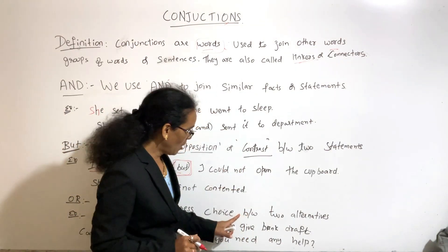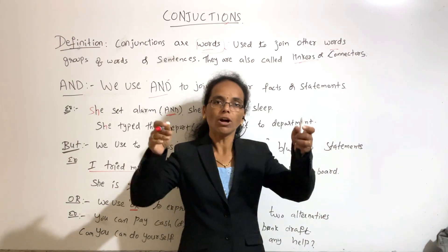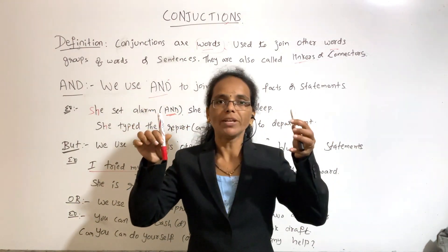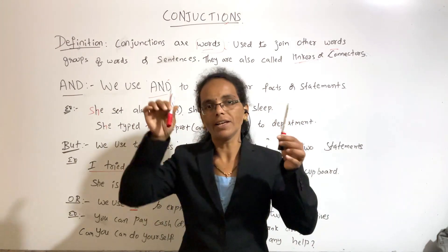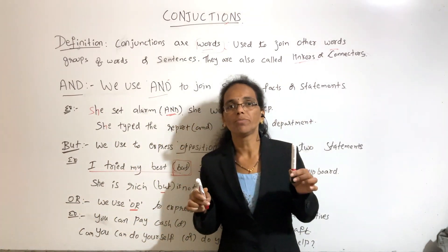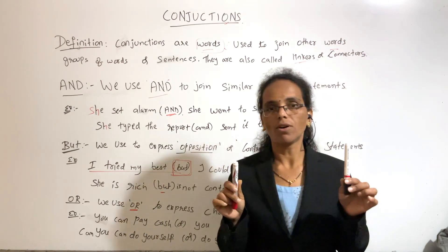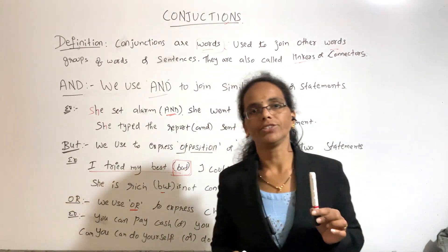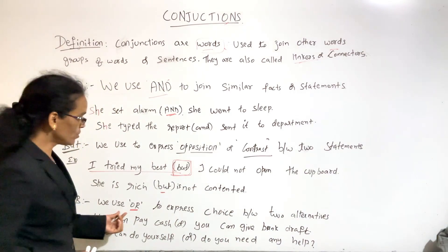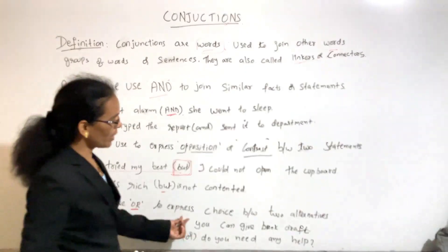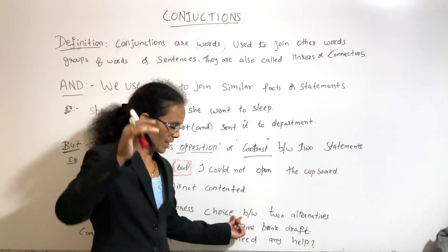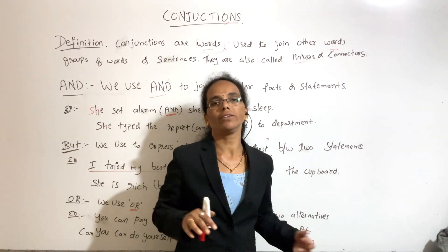Now, OR. We use OR between two alternatives. For example: red pen or black pen — either red or black. We use OR to express choice between two alternatives, from which you choose one.